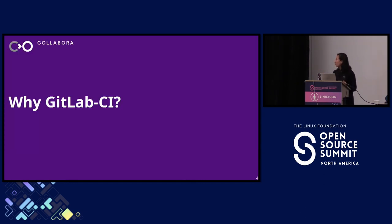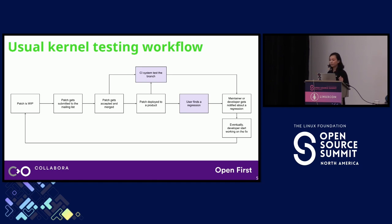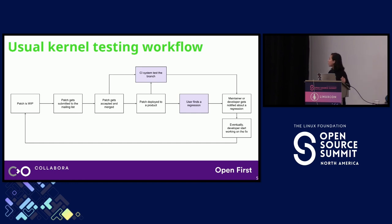Let's start with why GitLab CI. First, let's review the usual kernel testing workflow and go through each box in this diagram. First, there is the state where a patch is work in progress when a developer is starting working on something. Eventually this patch is good to go, so the patch gets submitted to the mailing list. After getting some reviews, this patch gets accepted and merged.